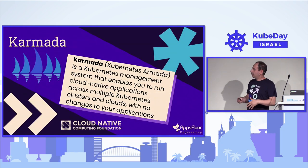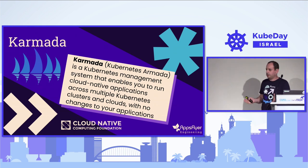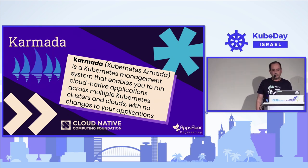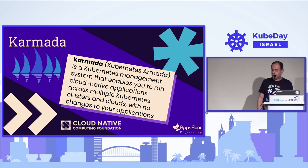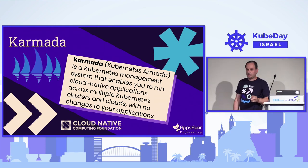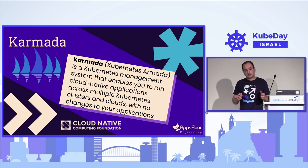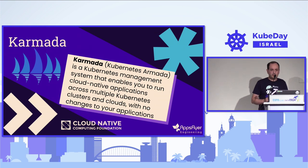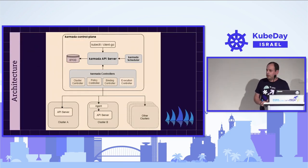This is where Karmada comes into place. Karmada, which is short for Kubernetes Armada, is a Kubernetes management system that enables you to run cloud-native applications across multiple Kubernetes clusters and clouds with no changes to your application. Just from this short statement, we are talking about not just multi-cluster, but multiple regions and even multiple cloud providers. Karmada is aiming to manage your entire global availability of your production. Let's do a short dive into Karmada's architecture.